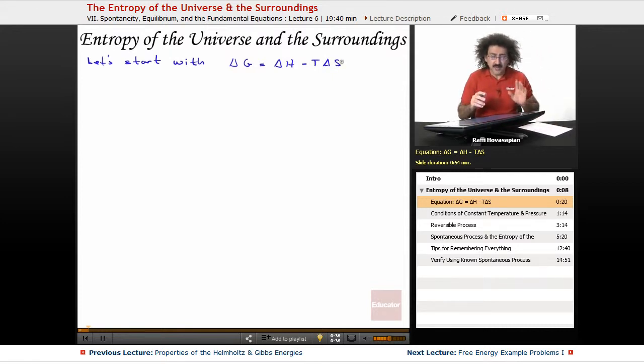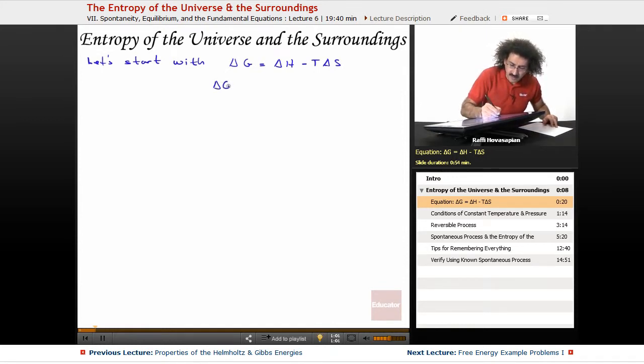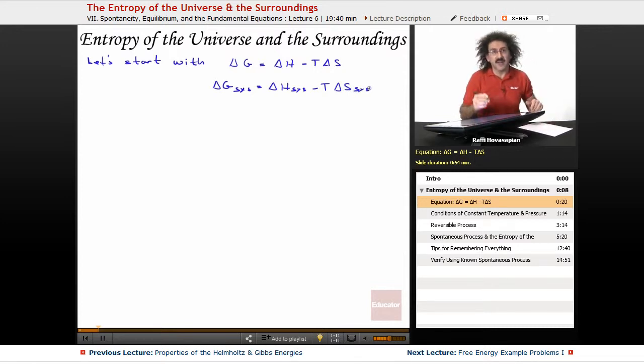Now every property in this equation, the delta G, the delta H, the delta S, and the T, in fact every property that we've been dealing with in all the equations that we've dealt with, they're all properties of the system. So unless we specifically say otherwise, the assumption is that they're always properties of the system. Well, not the assumption. They are. So basically this is delta G of the system equals delta H of the system minus T delta S of the system. We don't put it there because that's the general presumption.